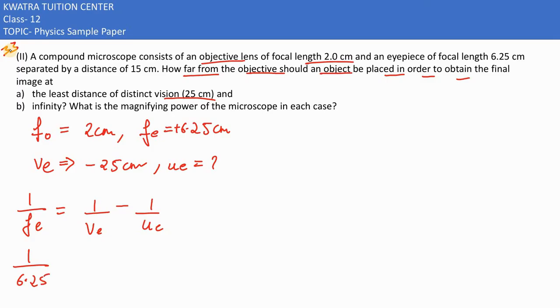1 over 6.25 equals 1 by vₑ which is minus 25, minus 1/uₑ. Rearranging, we get positive 1/uₑ equals negative 1 by 25 minus 1 by 6.25.